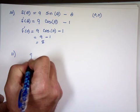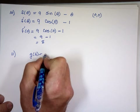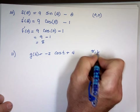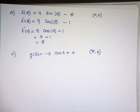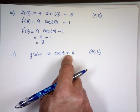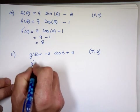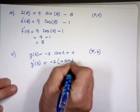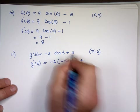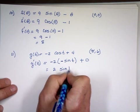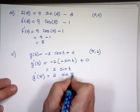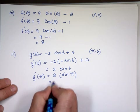g of t equals negative 2 cosine t plus 4, at the point pi comma 6. Find the slope of the graph at the given point — use the derivative. g prime of t: the derivative of cosine is negative sine, so negative 2 times negative sine of t is 2 sine of t. Derivative of 4 is 0. At pi: 2 sine of pi, and sine of pi is 0, so 2 times 0 equals 0.